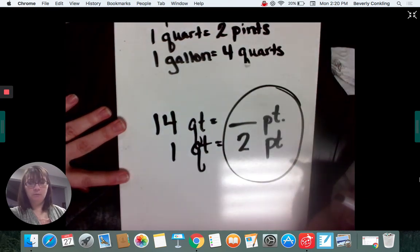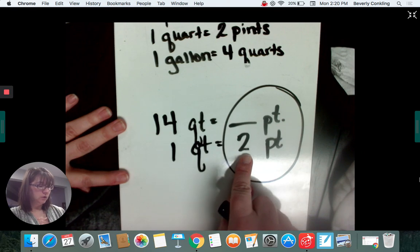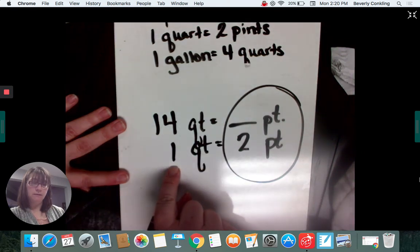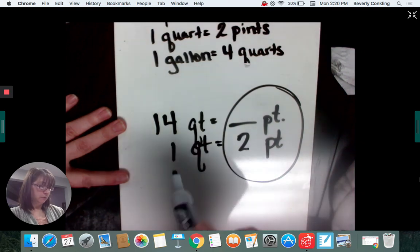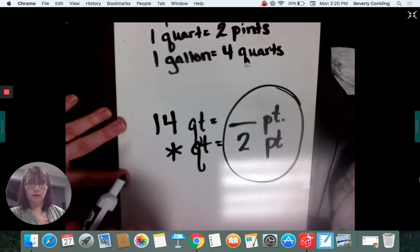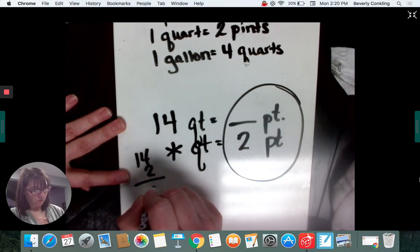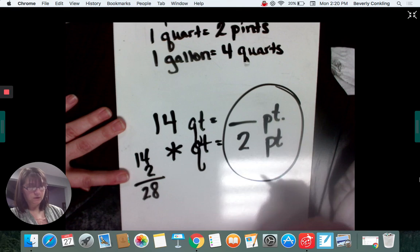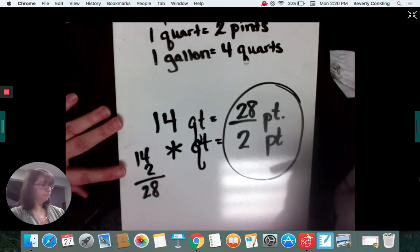Circle the side with the blank. Compare the bottom row only. Is two bigger or smaller than one? It's bigger. If I want a bigger answer, I'm going to multiply, and I never use the one. Fourteen times two. If that's not one you know, write it down. Fourteen times two is 28.